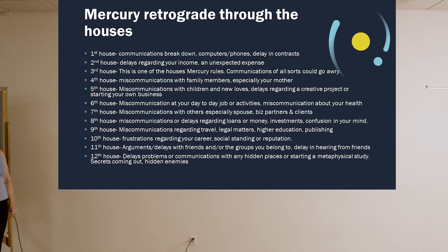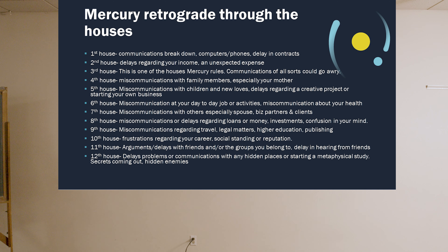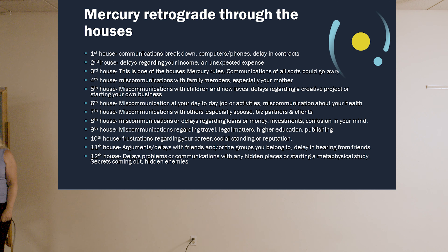We end with the twelfth house — called the hidden house. It's ruled by Pisces and the planet Neptune. There can be problems that aren't so obvious, with people working behind the scenes, behind your back. On a practical level, you may have to spend extra time on communications in hidden places like government offices or hospitals. On the positive side, take some time off — go to an ashram and really chill out. Let your mind go and get some rest, because the twelfth house is also the house of rest, and we're specifically talking about resting the mind when it comes to Mercury.